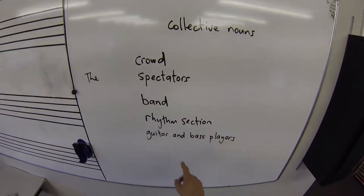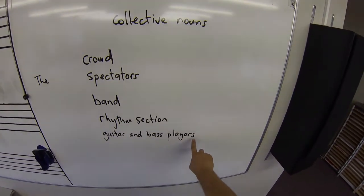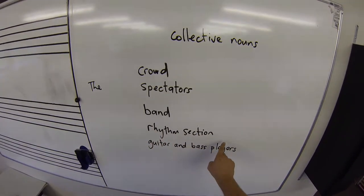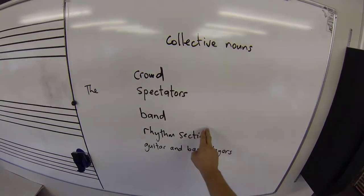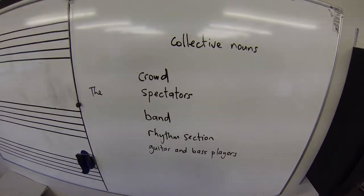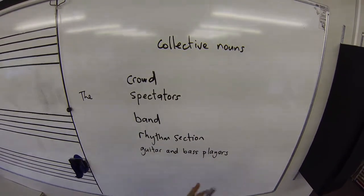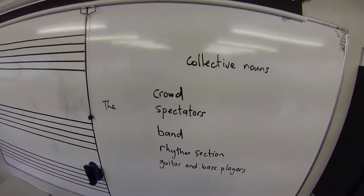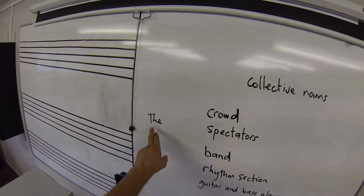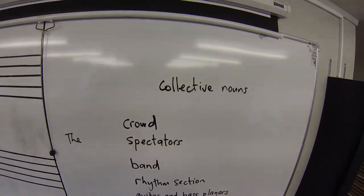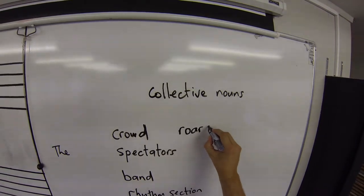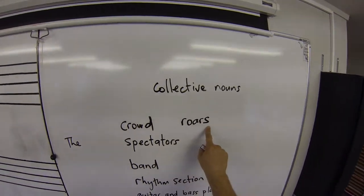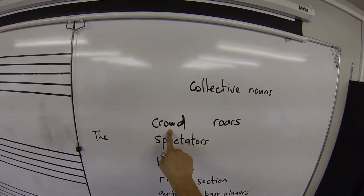Or we could take the guitar and bass players and group them together into talking about the rhythm section. All of a sudden that unit is considered singular — it's not plural, many people — it's a singular unit. So if we're to match these up correctly, the crowd roars. We need a singular verb to match the singular noun.